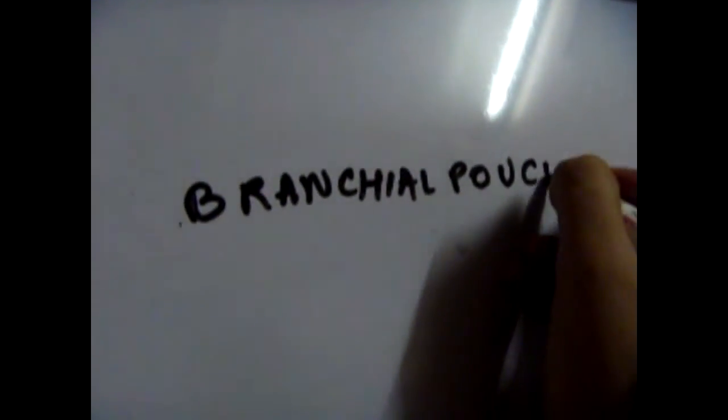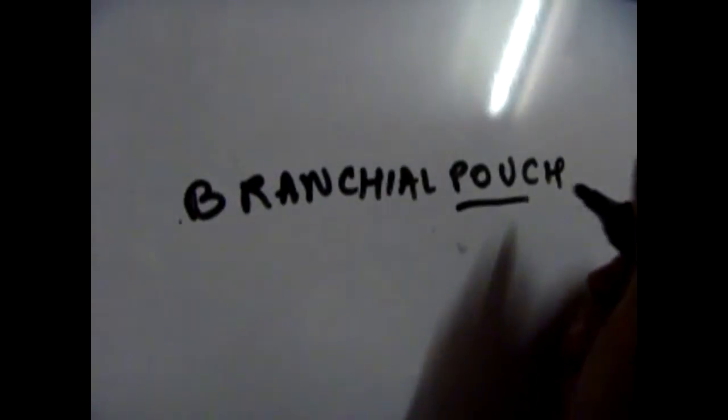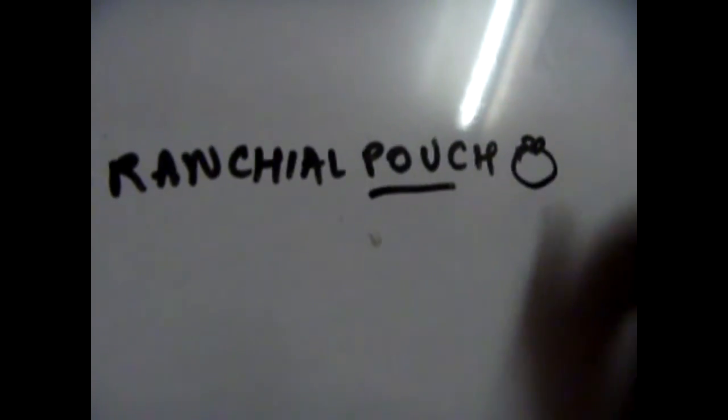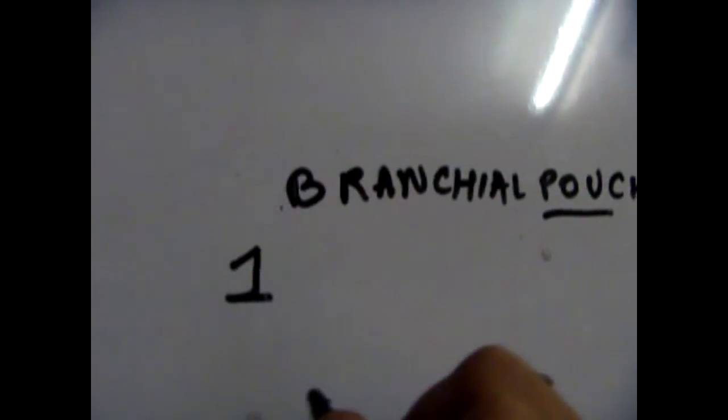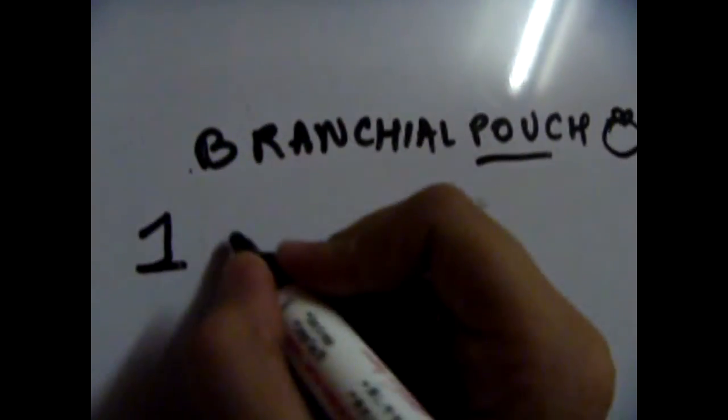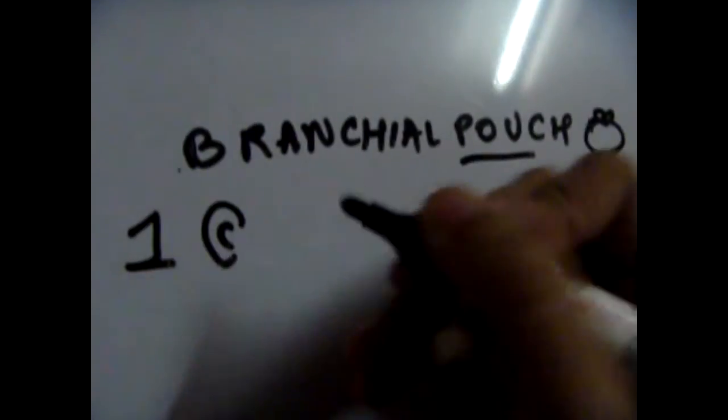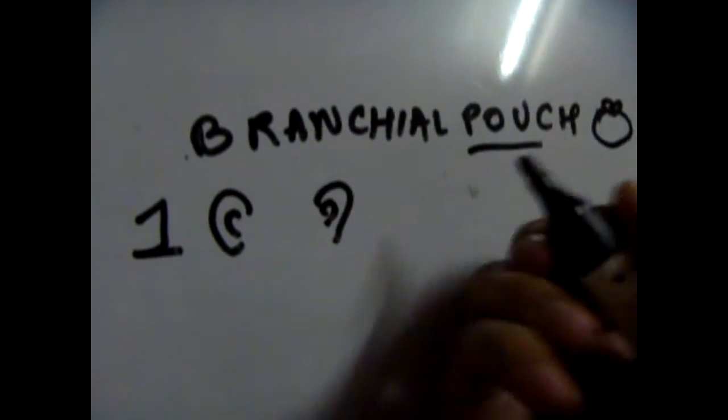We are now going to learn about branchial pouch derivatives, and it's very easy to remember that pouch kind of looks like a purse or something. So all the organs will be from the pouch.